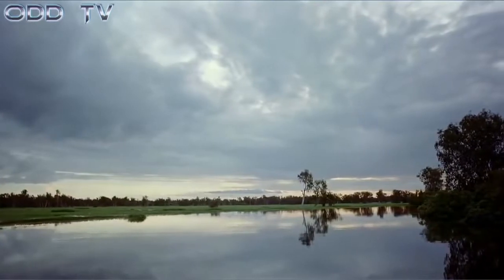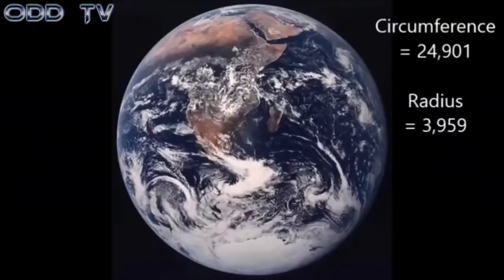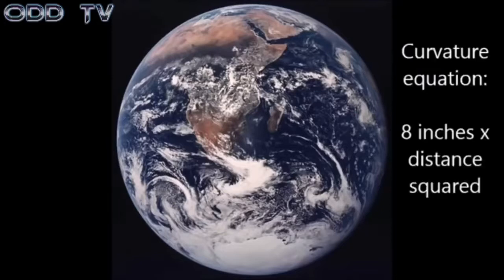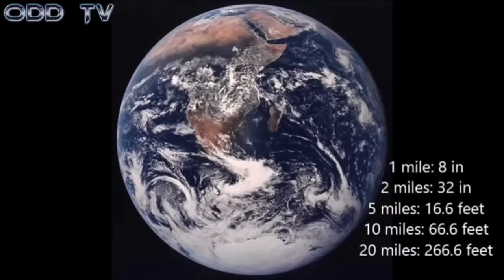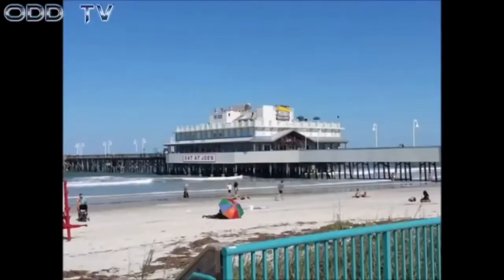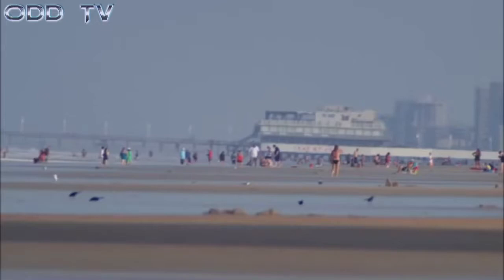NASA claims we live on a blue marble with a circumference of 24,901 miles and a radius of 3,959 miles. To find the curvature drop, you take eight inches times your distance squared. That gives you: eight inches at one mile, thirty-two inches at two miles, sixteen-point-six feet at five miles, and so on. I shot this pier in Daytona Beach, Florida — between the water and the walkway is about twelve to sixteen feet based on the height of people and the railing. I started at Granada, which is 4.92 miles away.